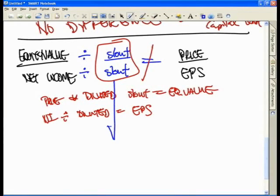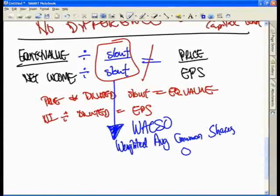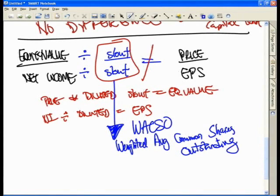Recall the following. The way net income is boiled down to earnings per share is via diluted shares outstanding. How did it calculate diluted shares outstanding? What we call WACSO. WACSO stands for Weighted Average Common Shares Outstanding. And you will find this in any standard accounting 101 textbook, how to calculate earnings per share.